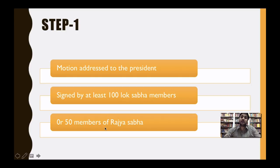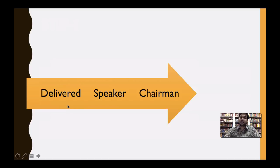If the same motion is to be brought in Rajya Sabha, it requires the support of 50 members. The document signed by 100 Lok Sabha members is delivered to the Speaker, and in the case of Rajya Sabha, it is delivered to the Chairman of Rajya Sabha. After signing by 100 Lok Sabha members or 50 Rajya Sabha members, the motion for removal of Supreme Court judges can be started.